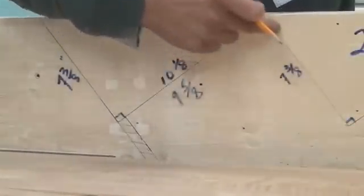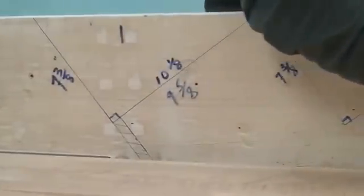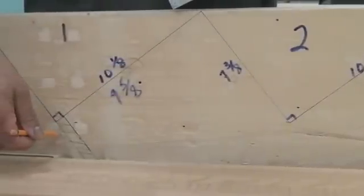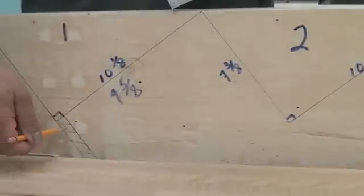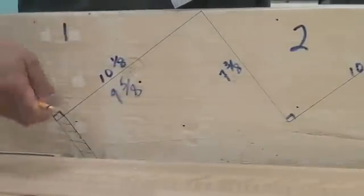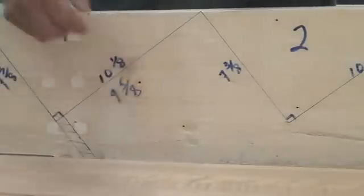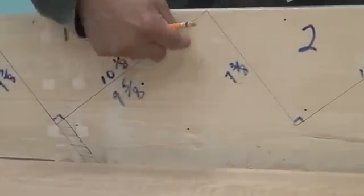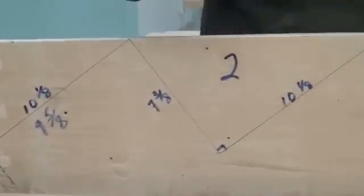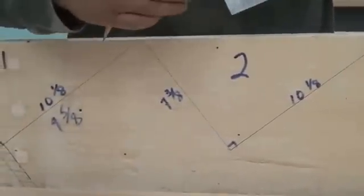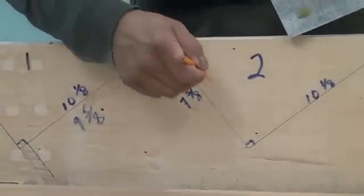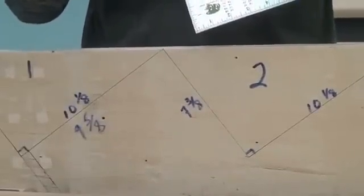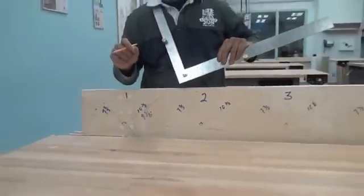And you're going to shorten that by the thickness of the riser board. So when you make a set of stairs, you're going to have a riser board that will nail to each one of the unit rises. And so we would take that thickness, and we would shorten off the back end. That will give us the very first run of 9-5-8, because we have a half-inch riser board. And then all the other runs are 10-1-8. All the other rises are 7-3-8, except the very first one, which is 5-7-8. 7-3-8 minus 1-1-2 inches.